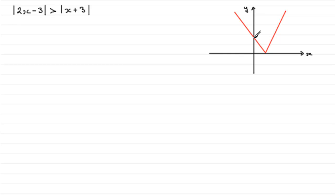So this is 3 here. This turning point value, where 2x minus 3 equals 0, is at x equals 3/2, or 1 and a half. So this is the graph of y equals the mod of 2x minus 3.